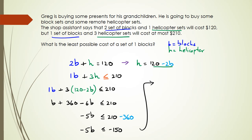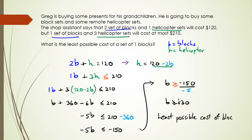Remember that when you divide by a negative number with inequalities, you have to change the sign. So dividing both sides by negative 5 flips the inequality, giving us B is greater than or equal to $30. That means the least possible cost of one set of blocks is $30. Thanks for watching — if you have any questions, pop them in the comments below, and don't forget to like, share, and subscribe.